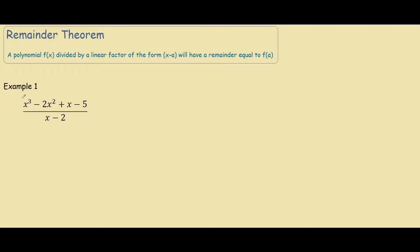So over here we have our numerator which is x cubed minus 2x squared plus x minus 5. We actually call this section over here our f(x). From our definition this is the polynomial and we're dividing by a linear factor of the form x-a. So the denominator is our linear factor. So as you can see our a in this case is 2.